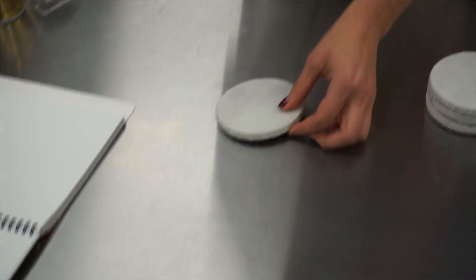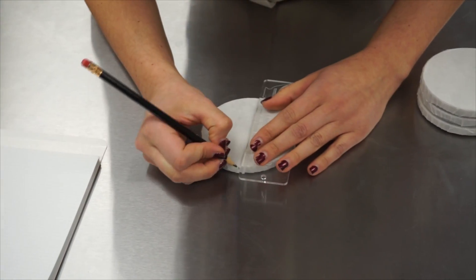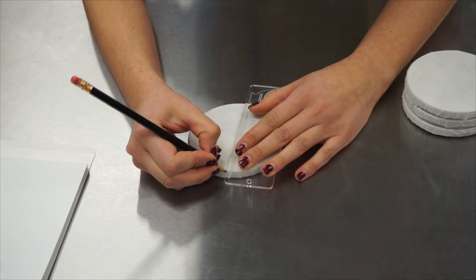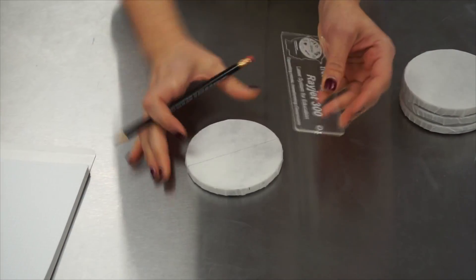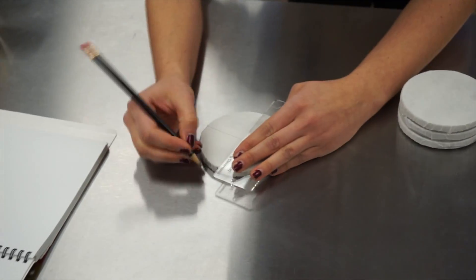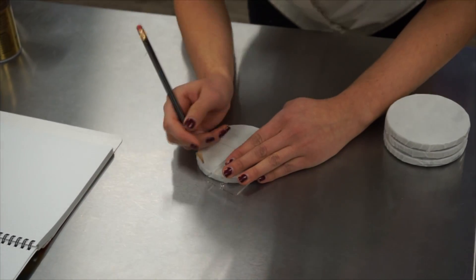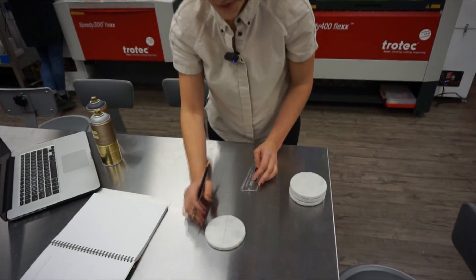Once you've done that, you take a straight edge and you draw a line connecting the two marks that you've made that are directly opposite each other. So there's one, go to the other side, mark one, and there's another one. So there's your center.